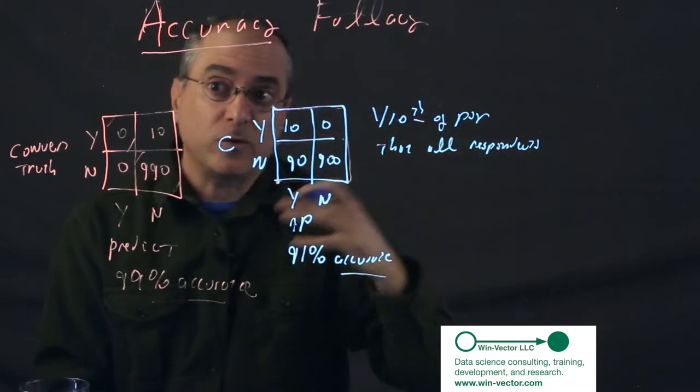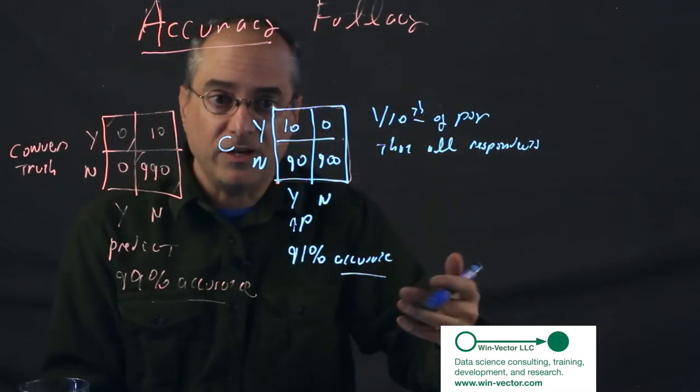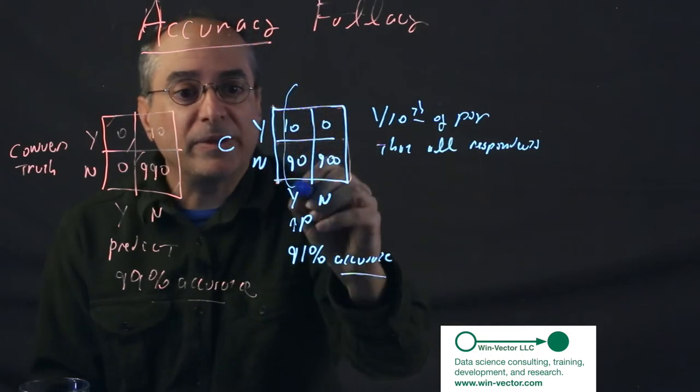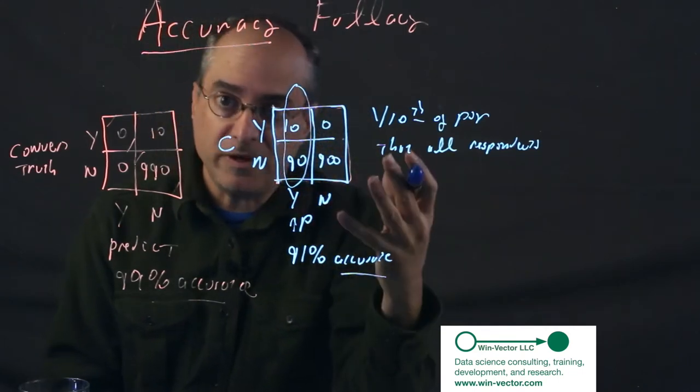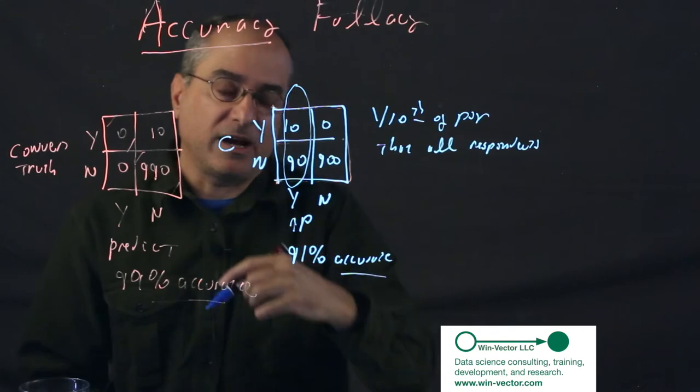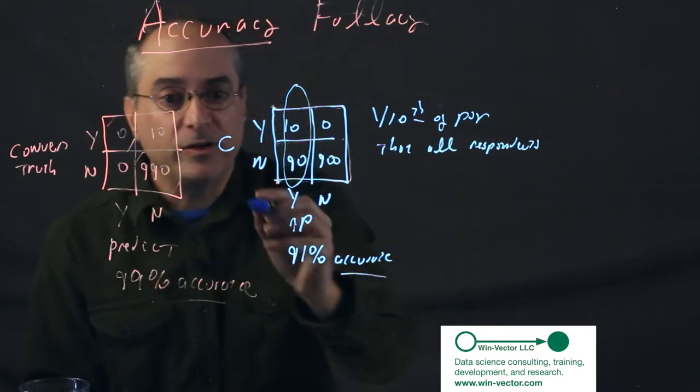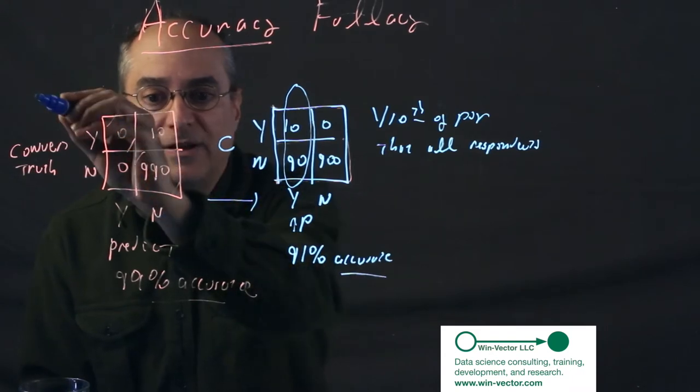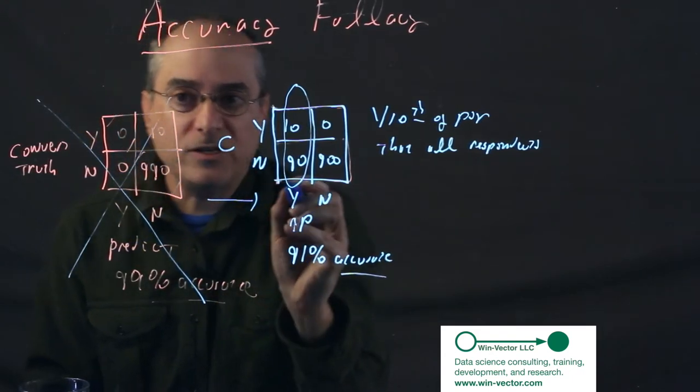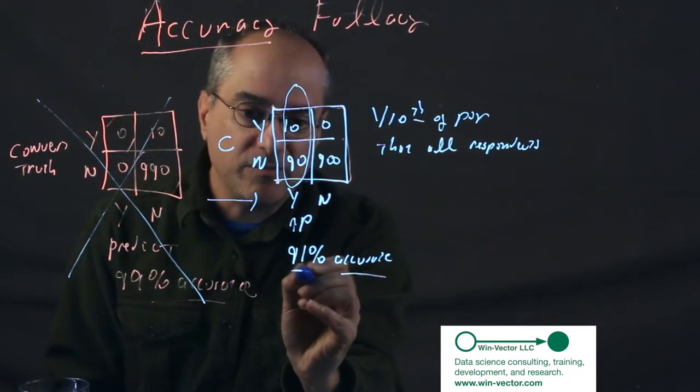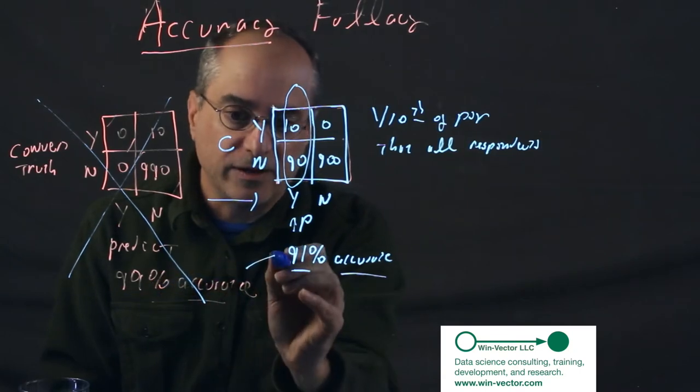It found one-tenth of the population that has all respondents. So, it achieved perfect recall or sensitivity on one-tenth the population. So, this one would give you all your business at one-tenth the marketing cost. So, it's actually a very effective decision procedure. So, you would prefer this one to this one. So, it's not just that accuracy is irrelevant. It often points the wrong way for imbalanced classes.